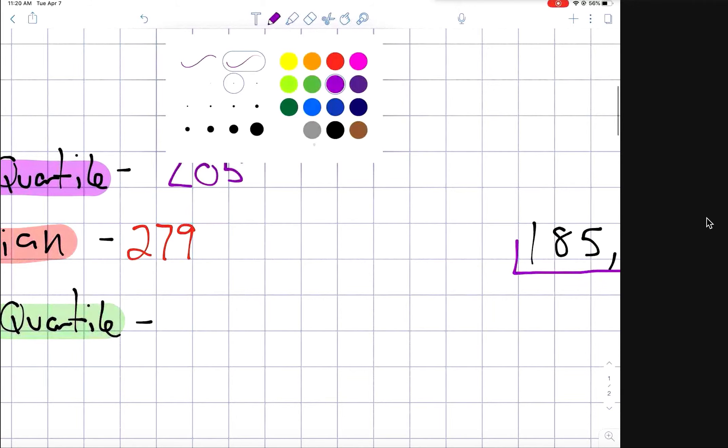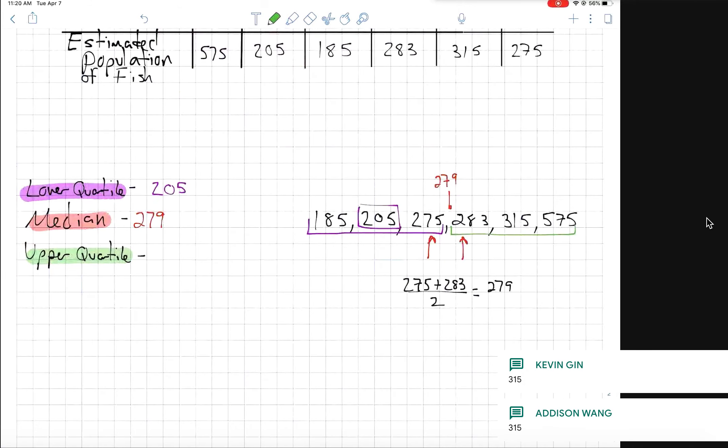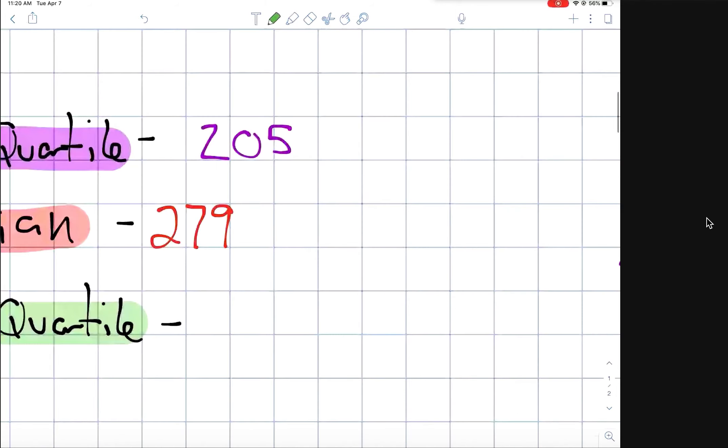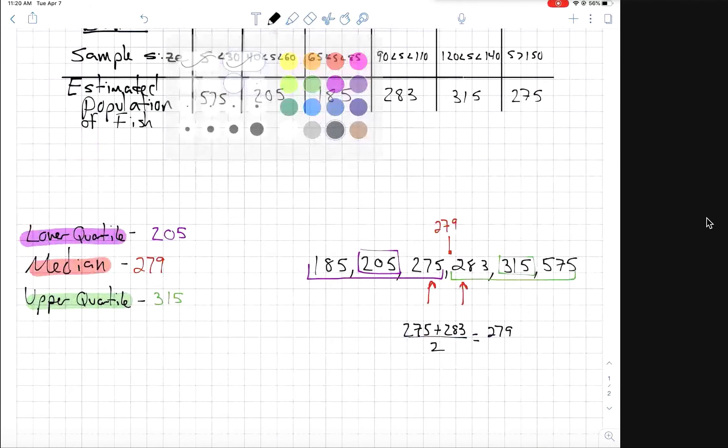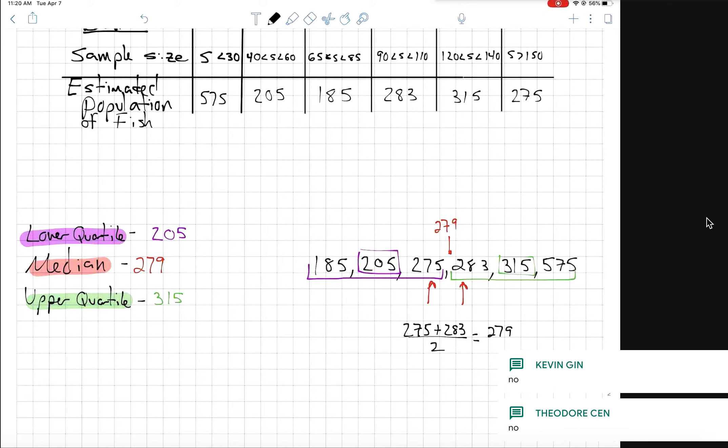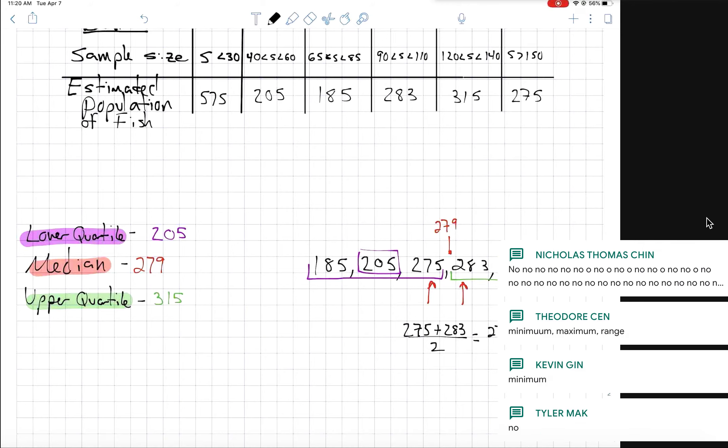And how about the value of our upper quartile? 315. Is this all the information we need to make a box plot? What else do we need? Minimum, maximum, okay.